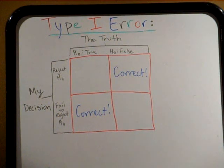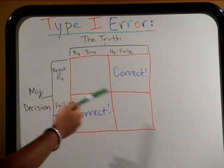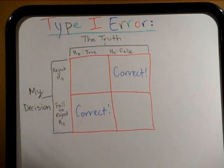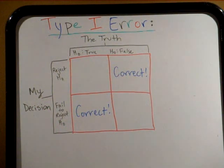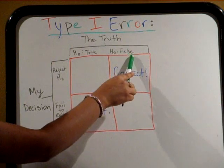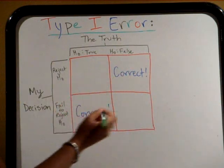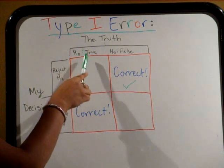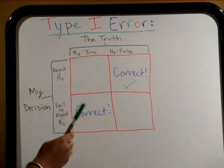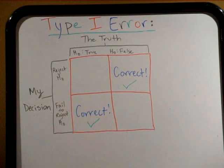This four-square model helps us determine if our decision is correct or what type of error we have made, depending on whether the null is true or false. If the null hypothesis is false and we reject it, we have made a correct decision. If the null hypothesis is true and we fail to reject it, we have also made a correct decision.